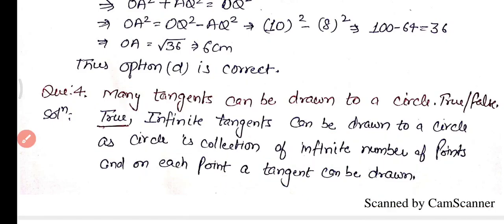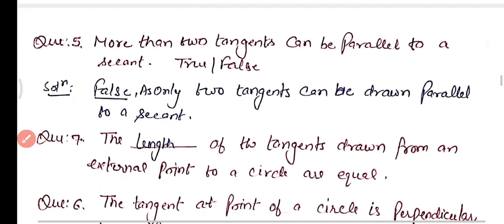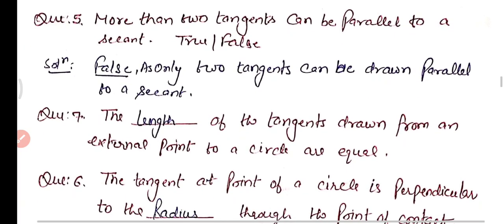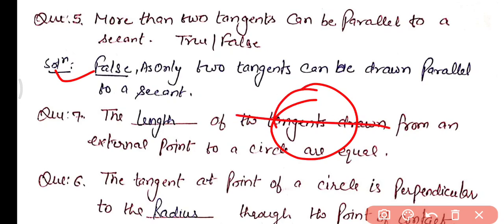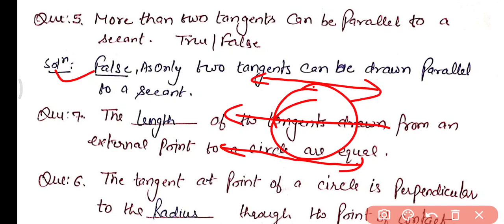Question number five: more than two tangents can be parallel to a secant — true or false? This statement is false, as only two tangents can be drawn parallel to a given secant. So the maximum number of tangents parallel to a secant is two. The given statement is false.